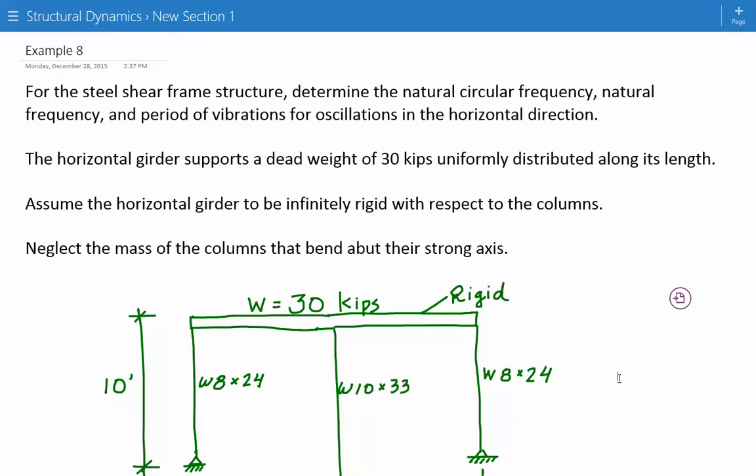Our problem statement is, for the steel shear frame structure, determine the natural circular frequency, the natural frequency, and the period of vibrations for oscillation in the horizontal direction.